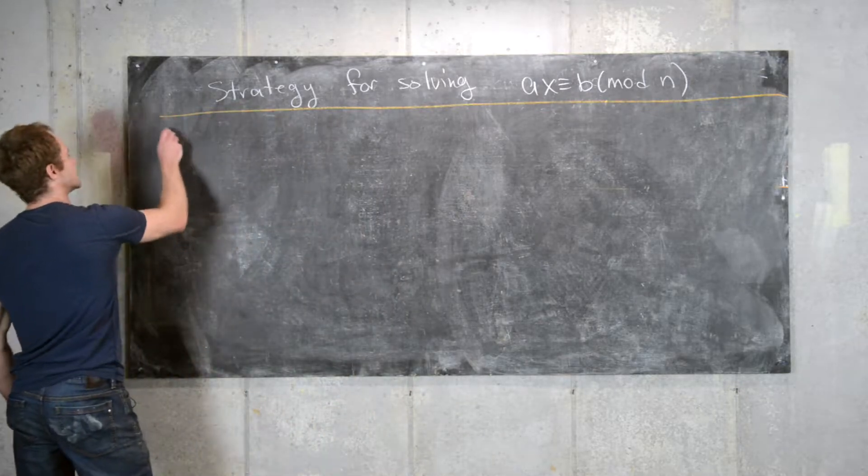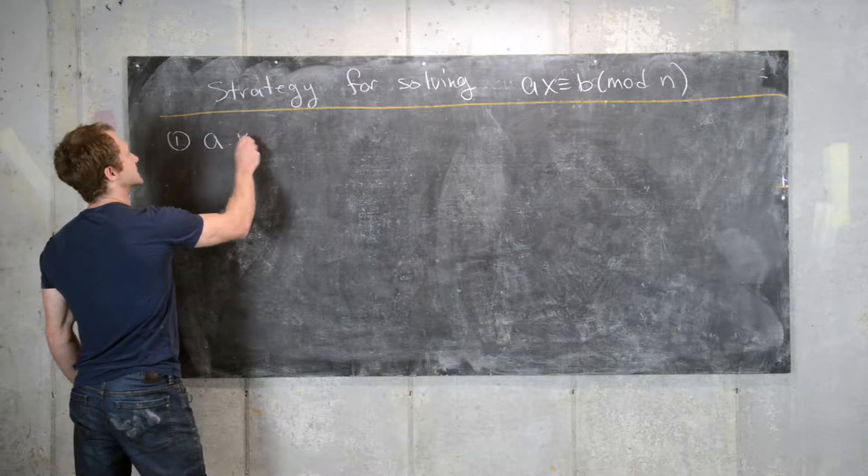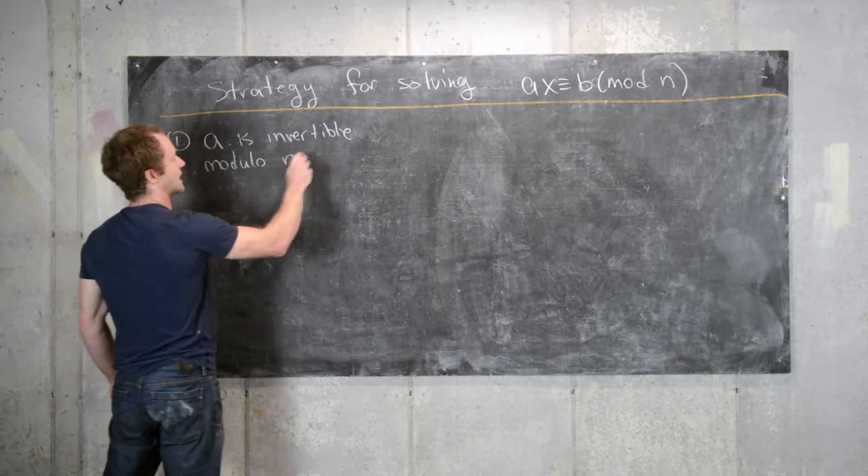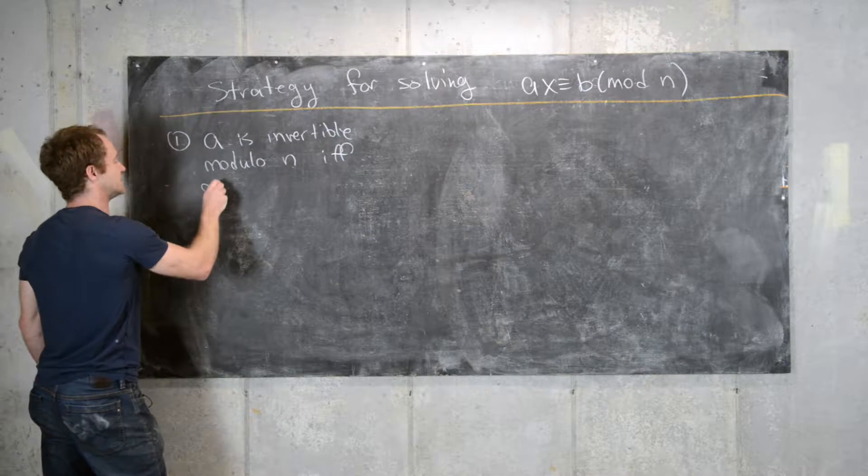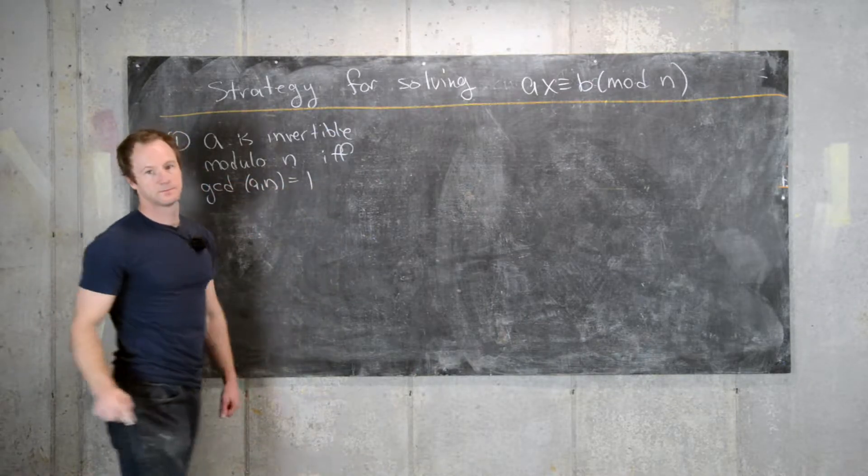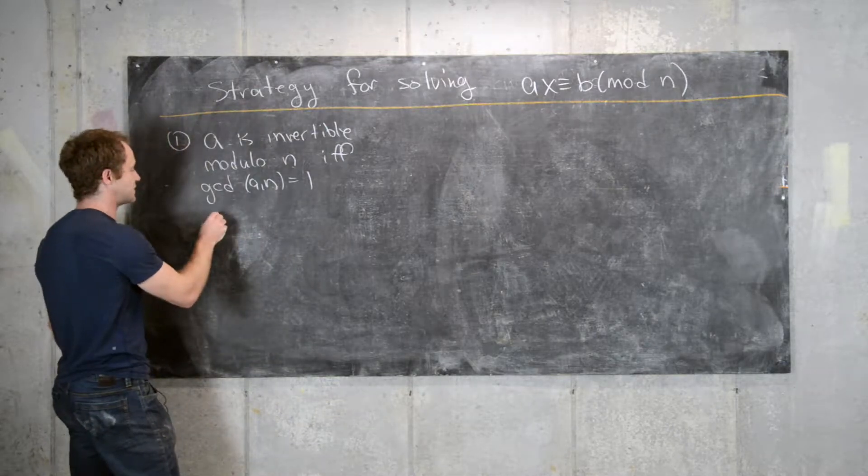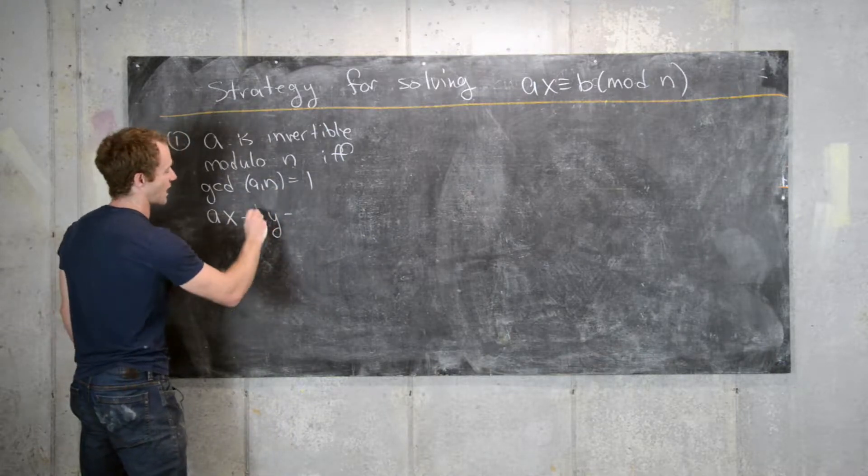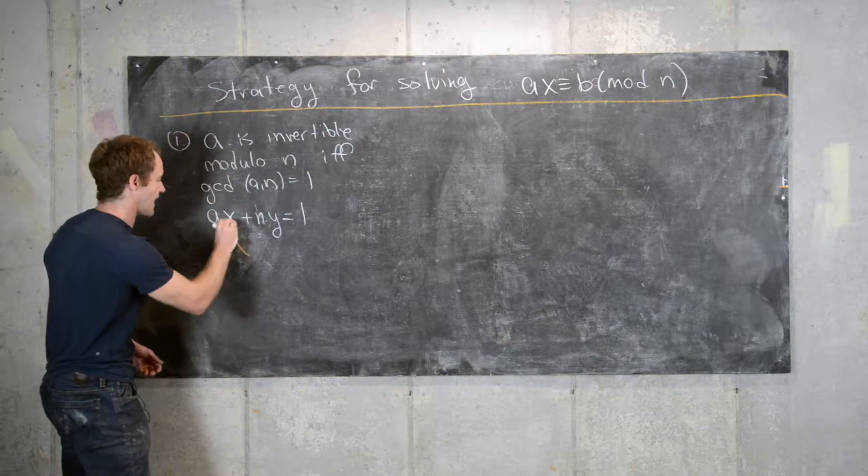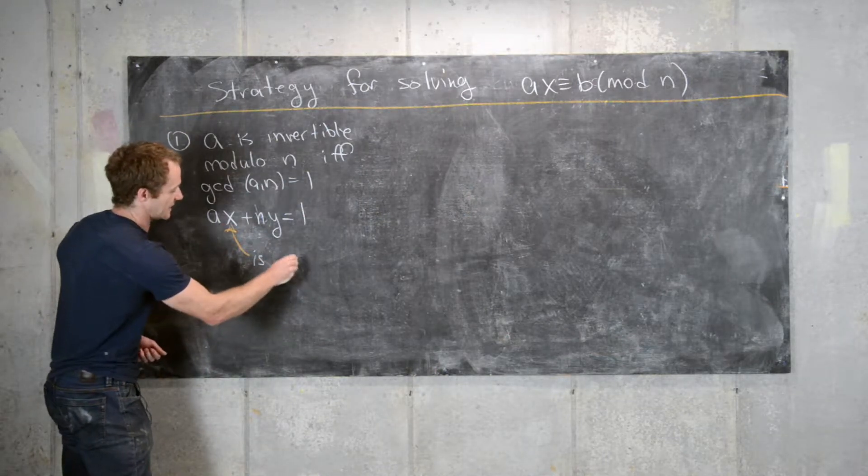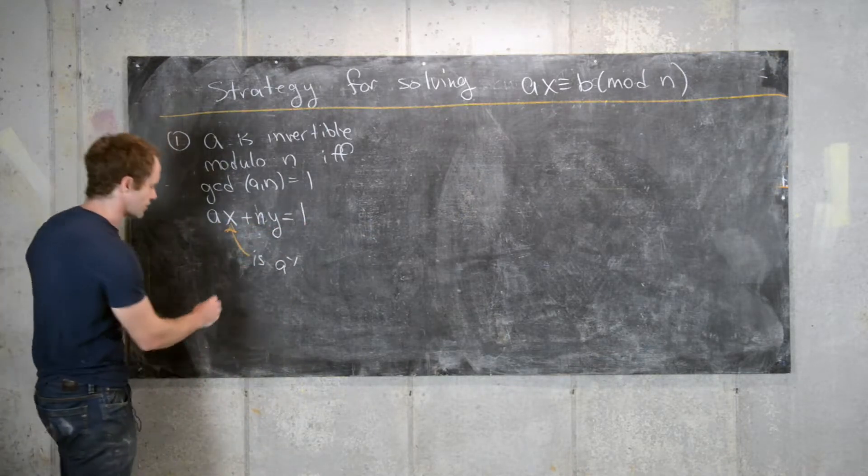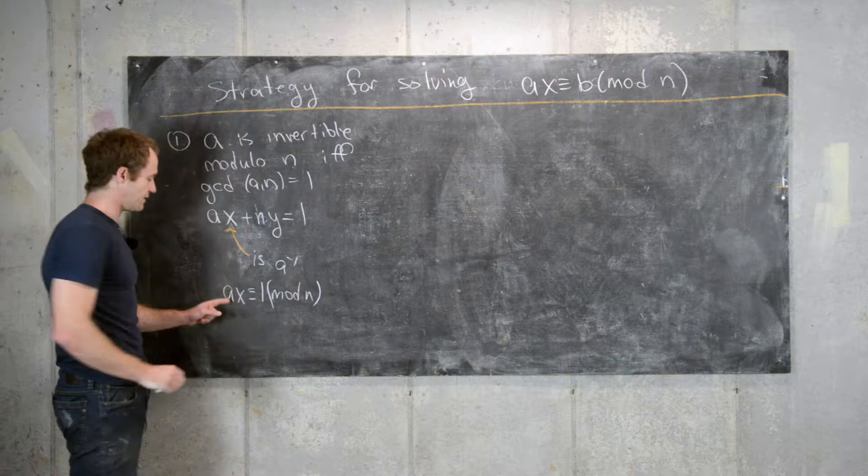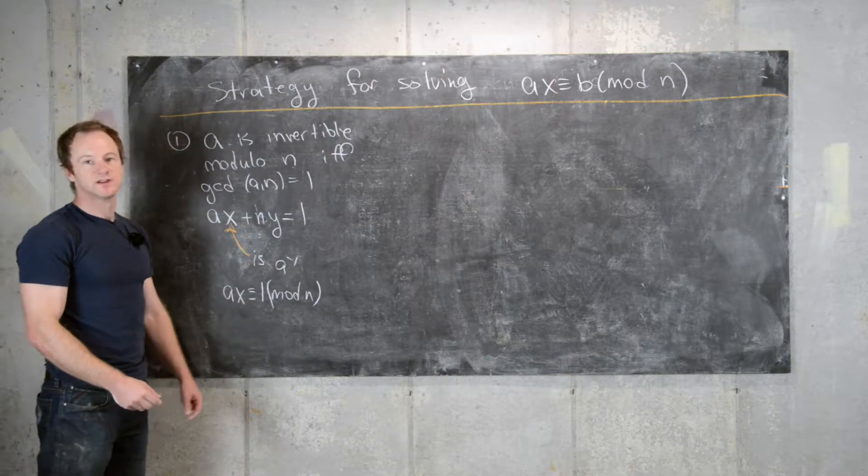So maybe the first part of the strategy is to notice that A is invertible modulo n if and only if the GCD of A and n equals 1. And in that case you can solve Ax plus Ny equals 1, and this value of x is A inverse. Because if you look at this equation modulo n, you have Ax is congruent to 1 mod n, so we might as well call x A inverse. So that's the first thing to notice.